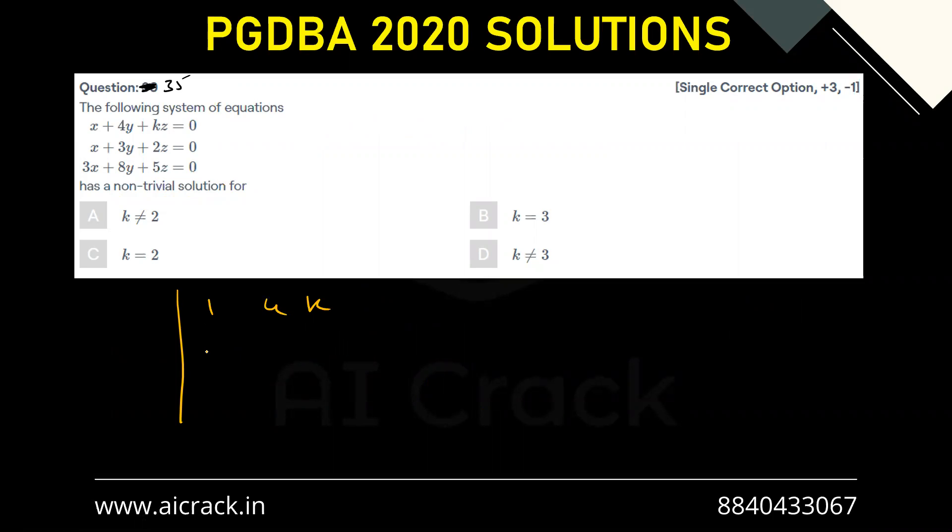we will be getting 1, 4, k, 1, 3, 2, 3, 8, 5. If you open this determinant,